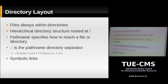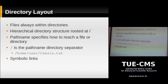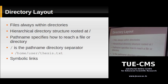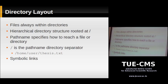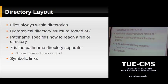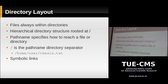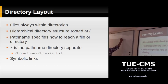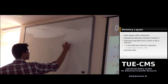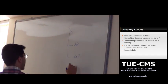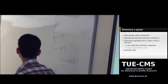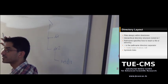Now let's look at directory layout. Those familiar with Windows know there's a C drive and D drive — but there are no drives in Unix. There's only one single hierarchical tree. Every file in a Unix system is always within a directory. You have this hierarchical structure starting with the slash (/) directory, with subdirectories within it, and subdirectories within those. Every directory in Unix is rooted — it begins from the root directory. Everything starts from slash.